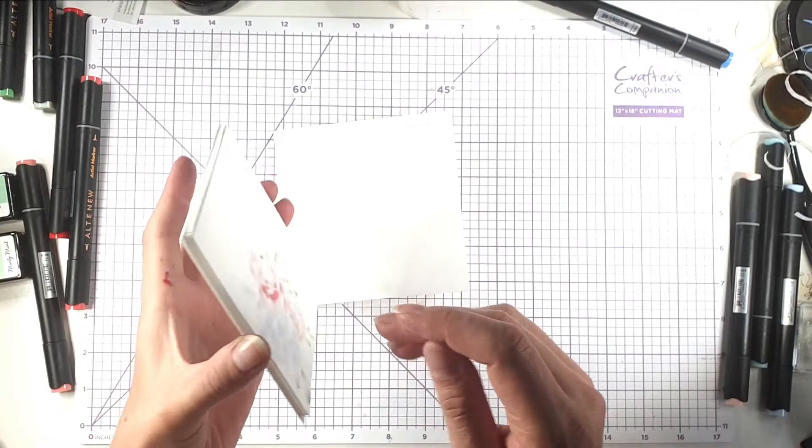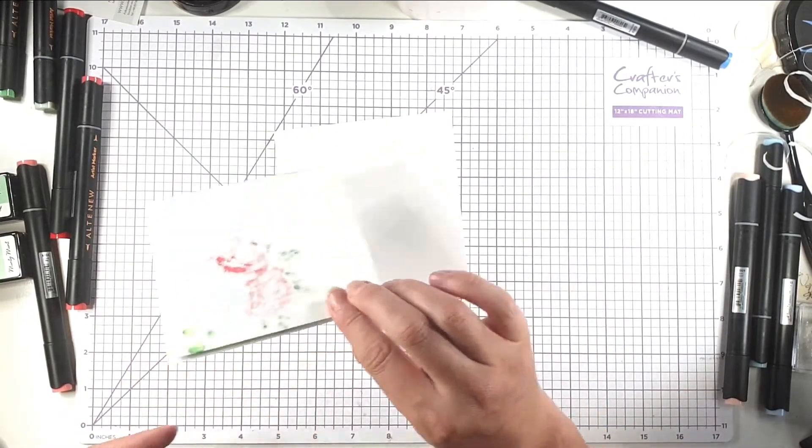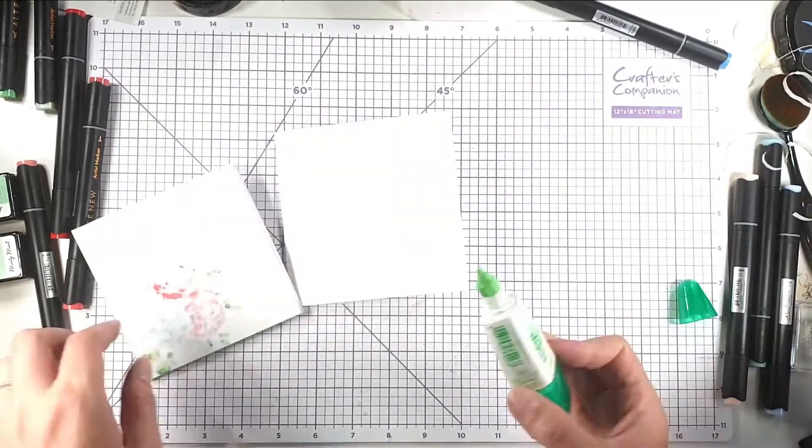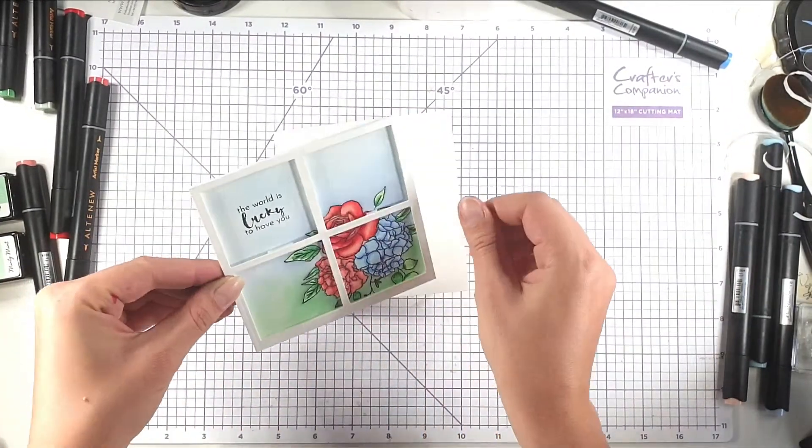So then I'm just going to pop some glue on the back of here, and then I can just pop that on my card front.